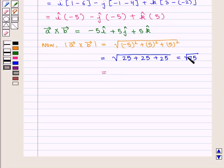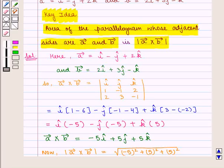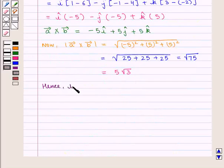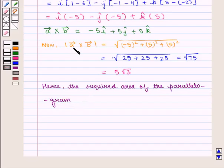That is, square root of 75 is equal to 5 into square root of 3. And from the key idea we know that the area of the parallelogram whose adjacent sides are vector A and vector B is given by modulus of vector A cross vector B. Hence, the required area of the parallelogram is 5 into square root of 3 square units.